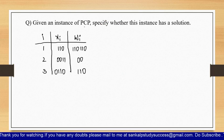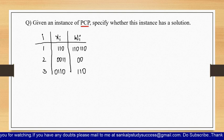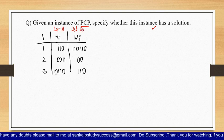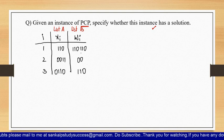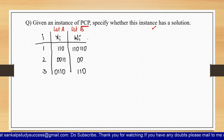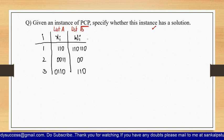Let us solve a problem to make it clear. An instance of PCP is given and you need to specify whether this instance has a solution or not. There are two lists — let us consider list A and list B. The i values are 1, 2, 3, so we have x1, x2, x3 and w1, w2, w3. If the combination of both lists gives equal strings, there is a solution.